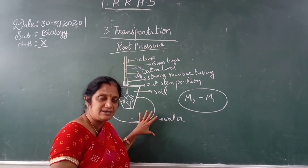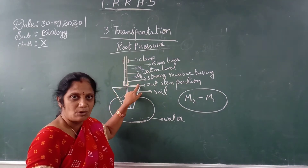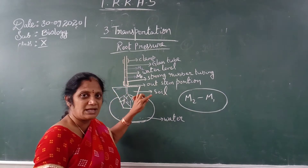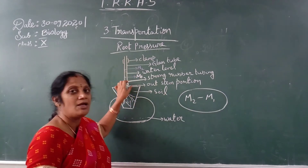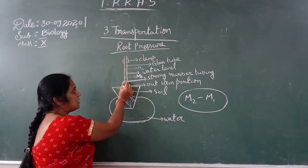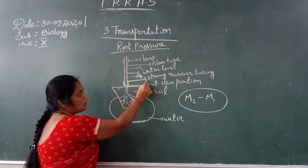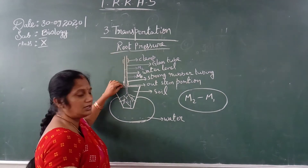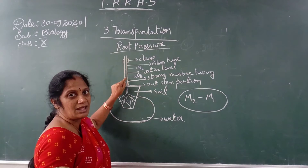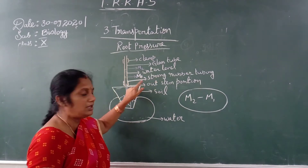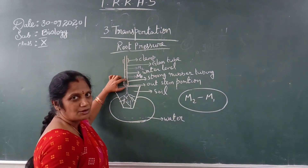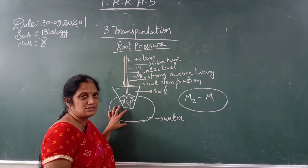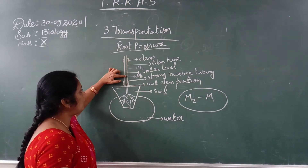To summarize the experiment: take a healthy rooted plant, cut it above the ground level, and fix the stem to a glass tube. The width of the glass tube should match the width of the stem. Join both with a strong rubber tube — otherwise water may escape. Pour a little water, mark the initial water level above the rubber tube, water the plant, and leave it for one to two hours.